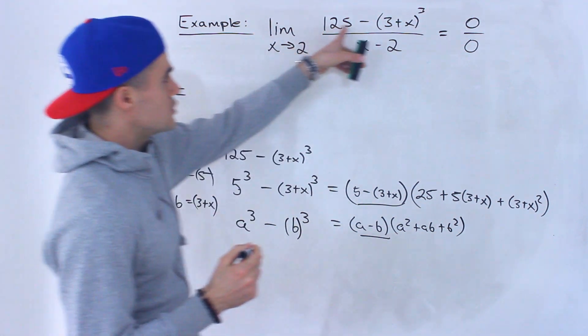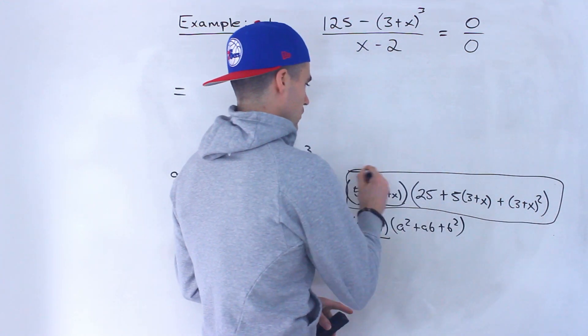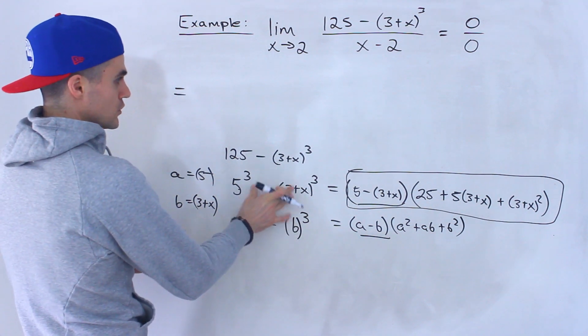So this numerator, another way to write it is like this over here, if we factor it as a difference of cubes. So what I'm going to do is I'm going to take this limit and rewrite that numerator like this.